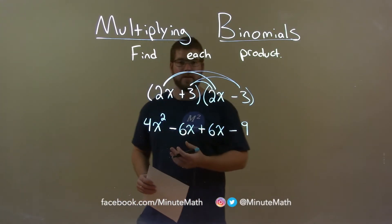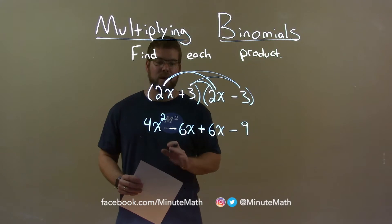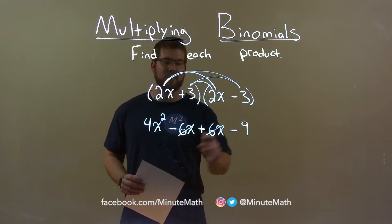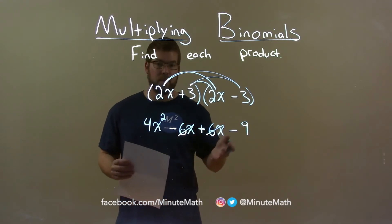Now let's combine our like terms and simplify. Minus 6x and positive 6x cancel each other out, which is 0, which we don't need to write. So we just bring down the rest.